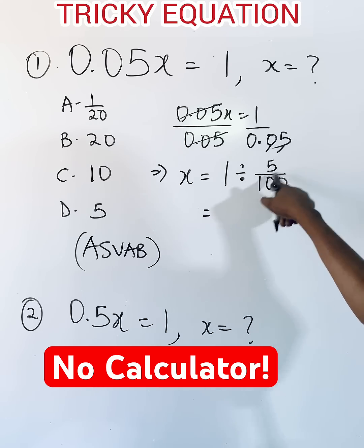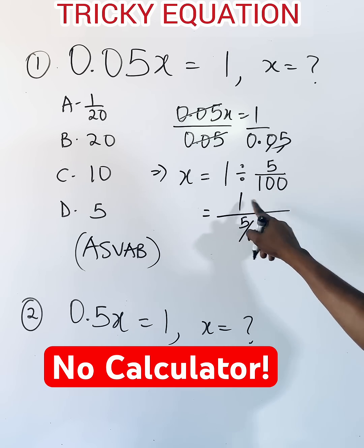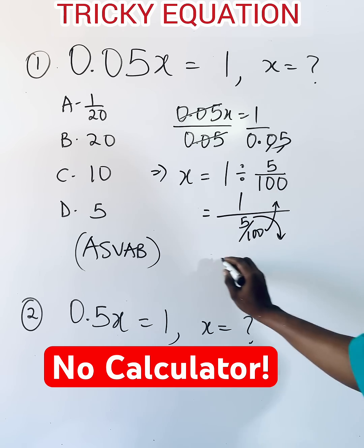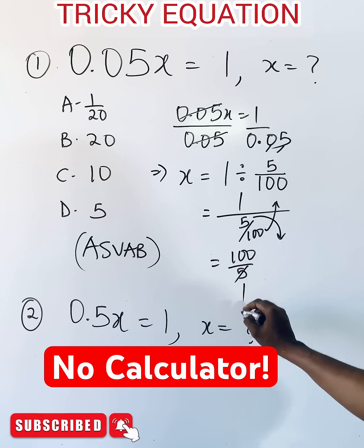So it means the reciprocal of this, this is just what it means. To reciprocate this, this goes up and this comes down, and that gives you 100 over 5. 5 goes in itself once, goes in 100 twenty times.